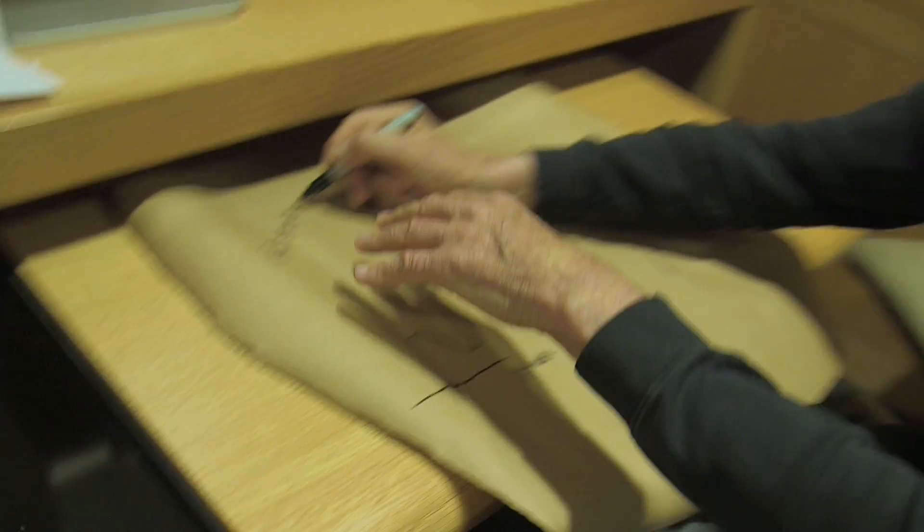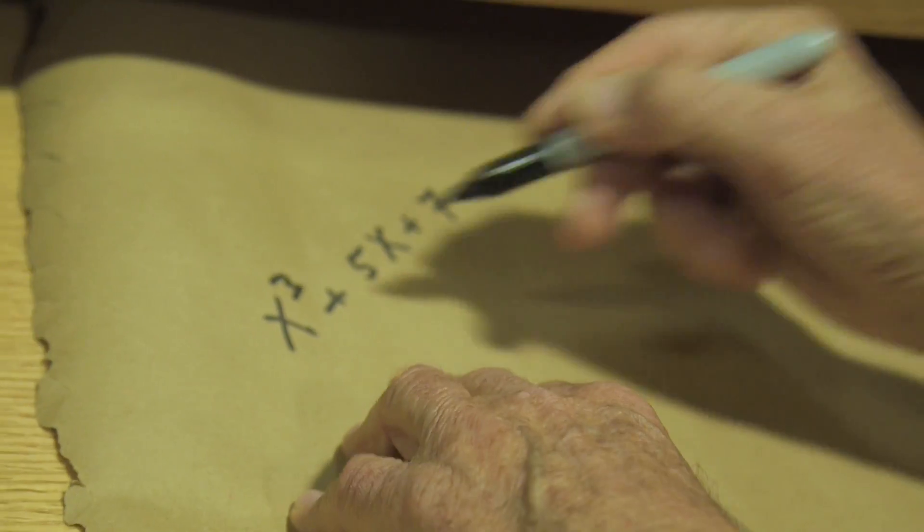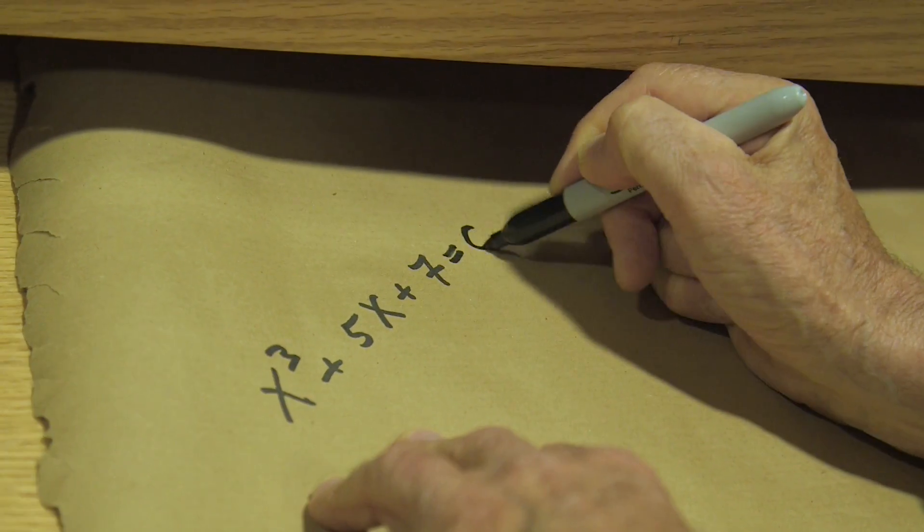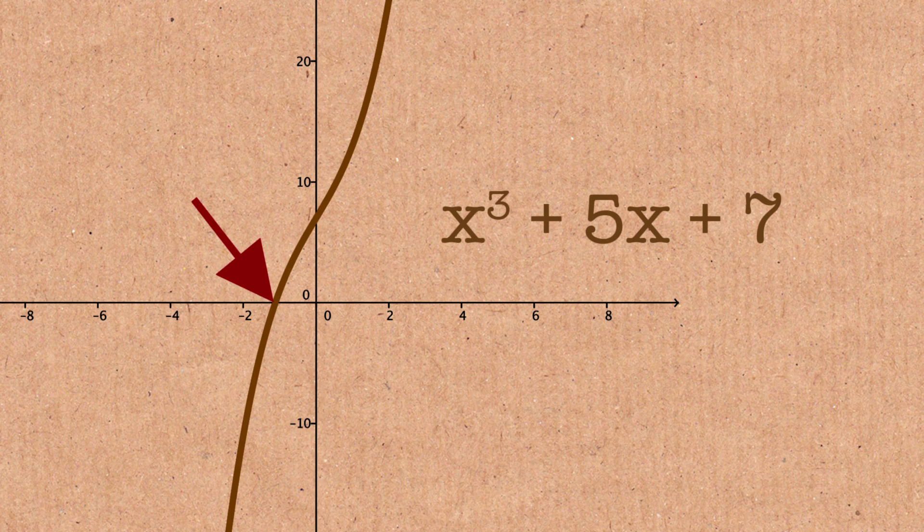These would be the solutions of the equation. For example, this one, we would have to figure out which of these three it is, but it doesn't matter. We're looking for solutions to equations of this. So, as I say, unless you're really perverse, you either have one or three solutions.